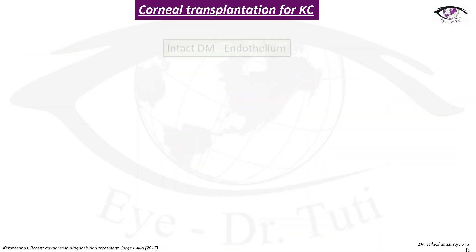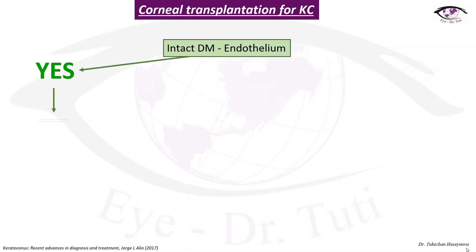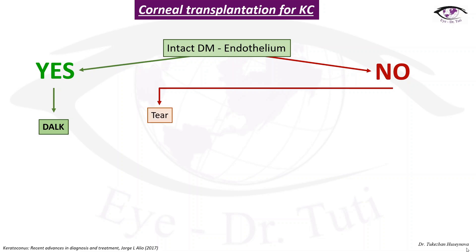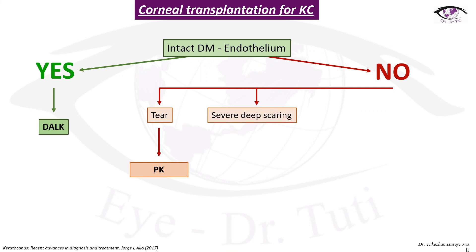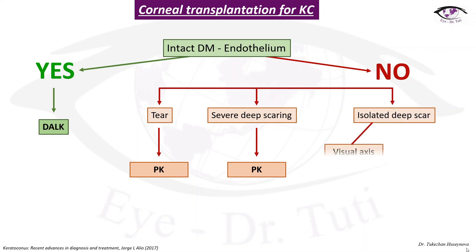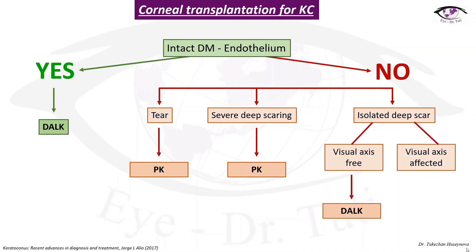Corneal transplantation for keratoconus: the first strategy question is whether the patient has an intact Descemet's membrane–endothelium complex. If yes, DALK is performed. If no: if the patient has a tear, penetrating keratoplasty is performed; if severe deep scarring, penetrating keratoplasty; if an isolated deep scar with visual axis free, DALK may be performed; if the visual axis is affected, either penetrating keratoplasty or DALK can be recommended.